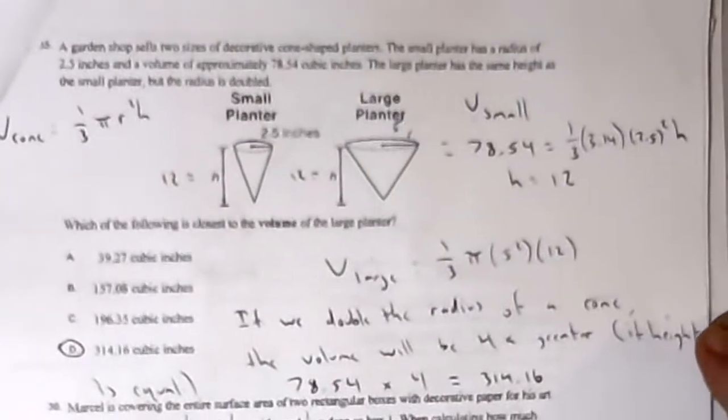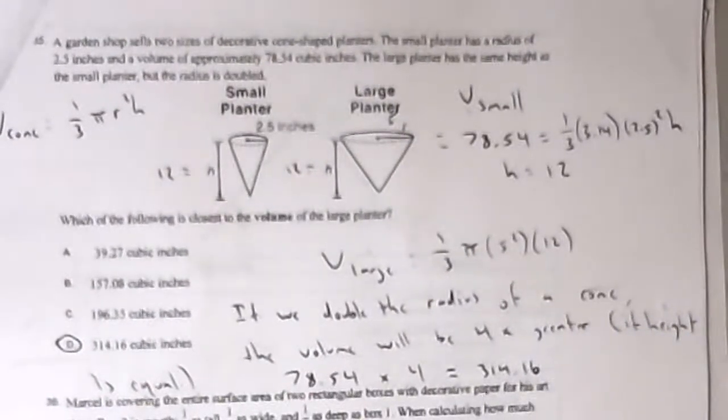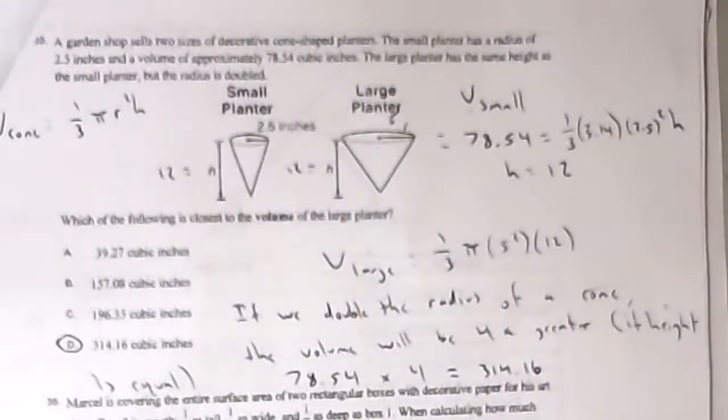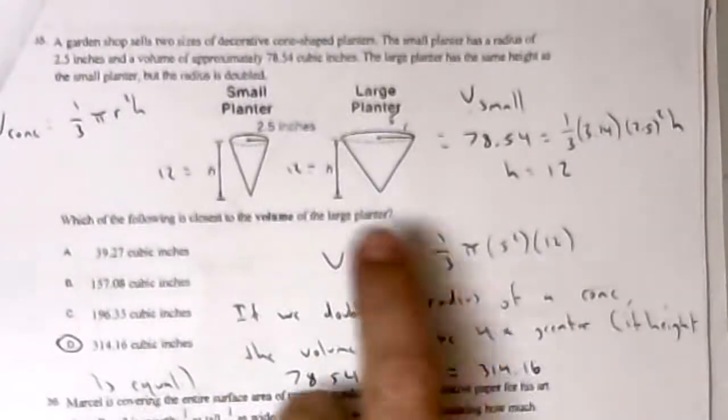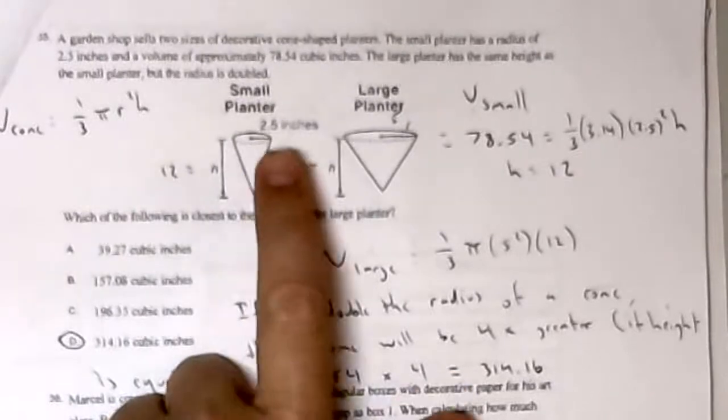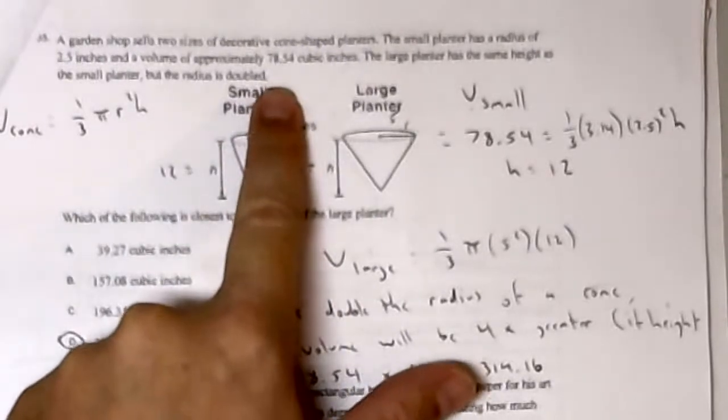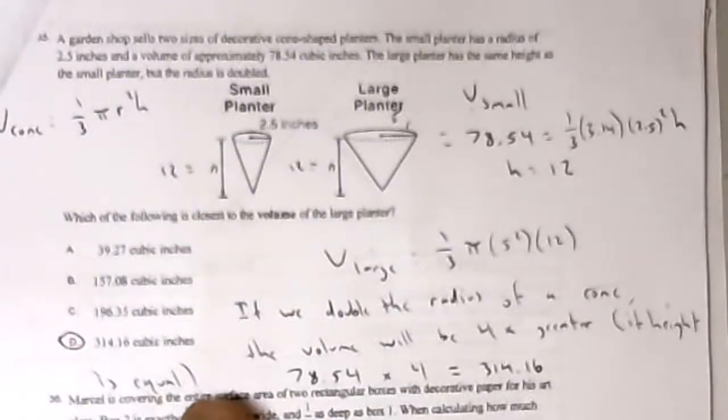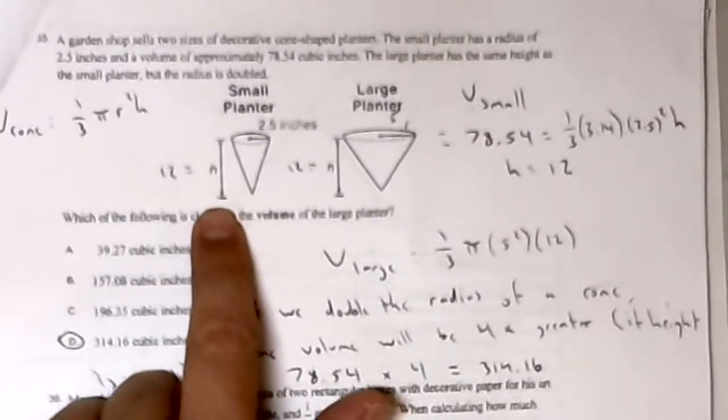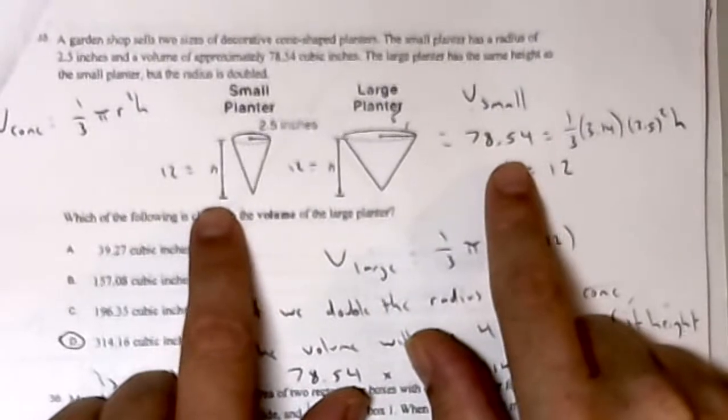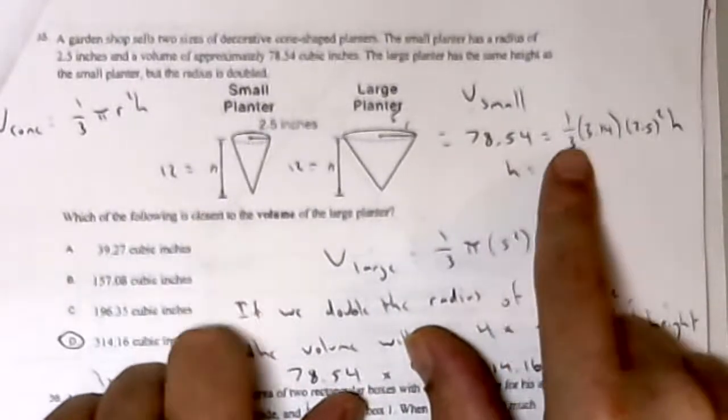A lot of volume on this test. We have two cones: a small planter and a large planter. The small planter has a radius of 2.5 inches and a volume of 78.54 cubic inches. So what I'm going to do first is solve for the height of the small planter, because I'm going to need that. I use the number they give me: 78.54 equals the formula for the volume of a cone.